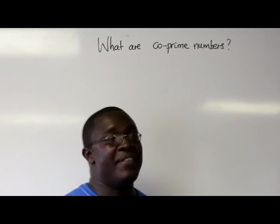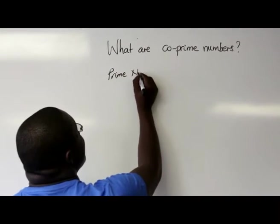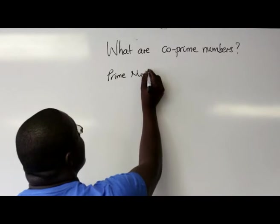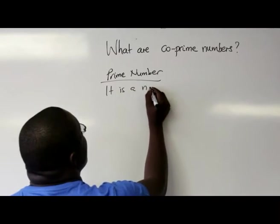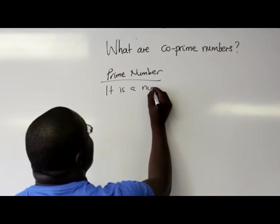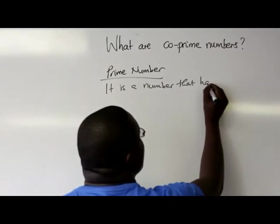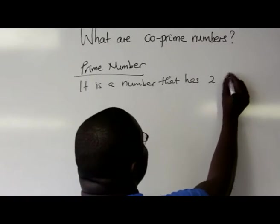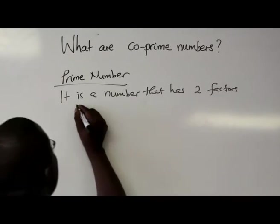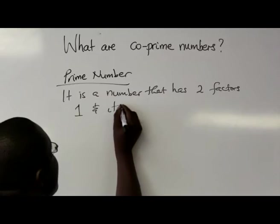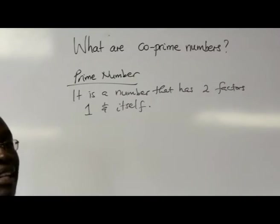A prime number is a number that has two factors: one and itself. So that's a prime number.